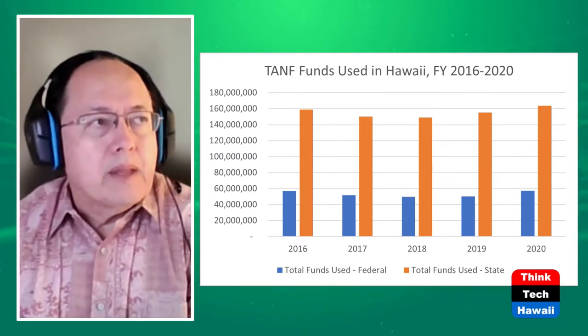The four goals are: assisting needy families so children can be cared for in their own homes or the homes of relatives; reducing the dependency of needy parents by promoting job preparation, work, and marriage; preventing pregnancies among unmarried persons; and encouraging the formation and maintenance of two-parent families. Those are pretty broad goals. You can meet them through block grants to people, educational programs, employment services like job coaching and placement — all that stuff counts.